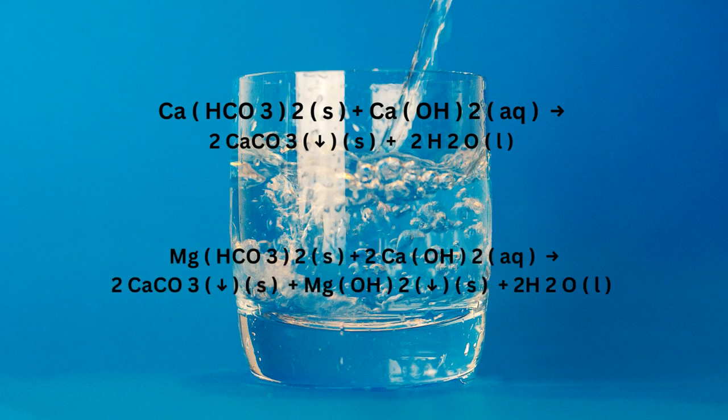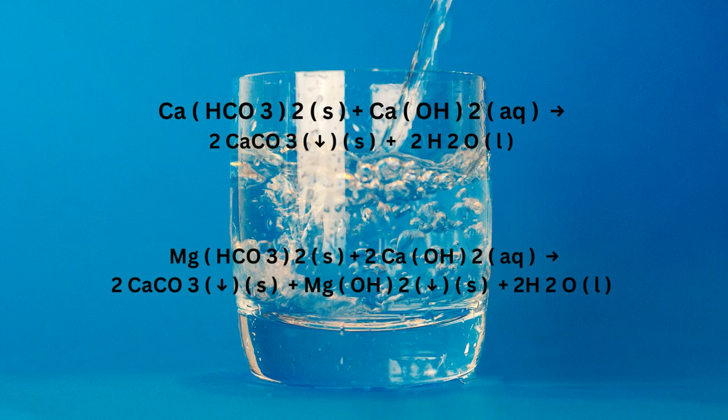The reactions in Clark's method are: Ca(HCO3)2 + Ca(OH)2 → 2CaCO3 (solid) + 2H2O. And: Mg(HCO3)2 + Ca(OH)2 → 2CaCO3 (solid) + Mg(OH)2 (solid) + 2H2O.